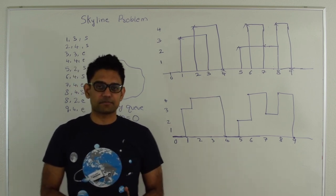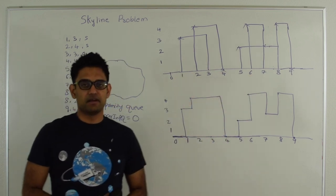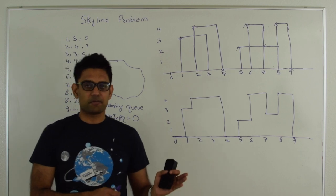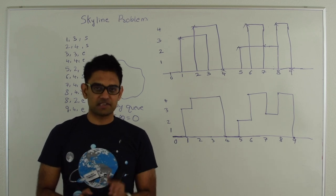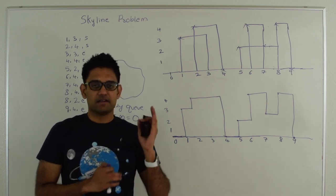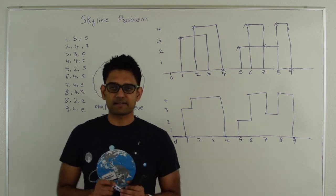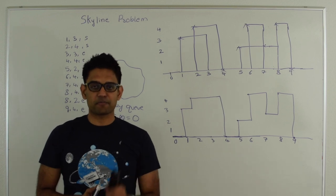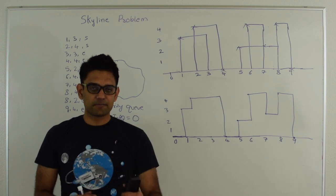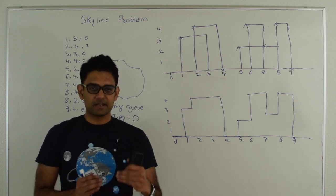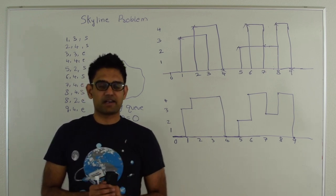The algorithm is as follows: we move from left to right encountering the starts and ends of the buildings. Whenever we encounter the start of a building we push the height of that building into a priority queue. If the max in the priority queue changes, it means this building at this start point is taller than every other overlapping building, so it needs to be part of the final answer. Whenever we encounter the end of a building, we remove that building from the priority queue, and again if the max changes, that value needs to be part of the final answer.